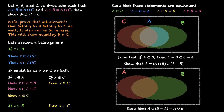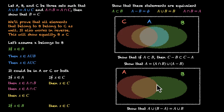Last one: show that A union (B minus A) equals A union B. B minus A is the part of B not in A. Taking A and joining it with B minus A — the orange circle plus the remaining green part — gives us A union B. That's exactly what the image shows, hence proved.